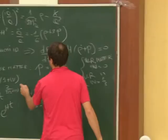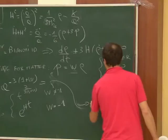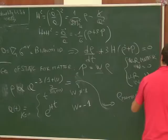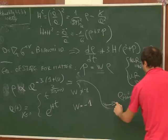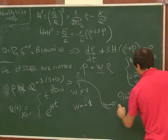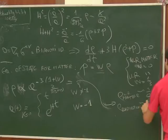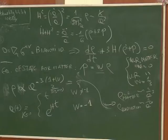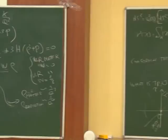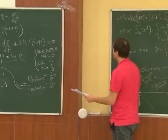We are now almost ready to address the problems of standard Big Bang cosmology. The only missing piece is the relative energy densities. If there are many components, ρ = Σ ρ_i and p = Σ p_i, with each component having its own equation of state w_i = p_i/ρ_i. We define the fractional energy density of component i at present time as Ω_{i,0} = ρ_{i,0}/ρ_{c,0}, where ρ_c is the critical energy density — the energy density needed for the universe to expand at the present Hubble rate H_0, defined by H_0² = ρ_c/(3M_Pl²).